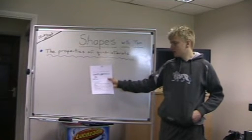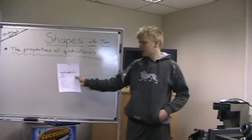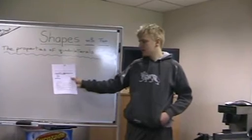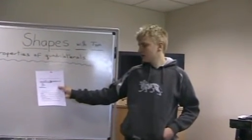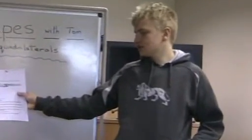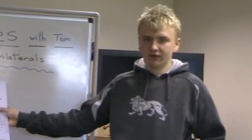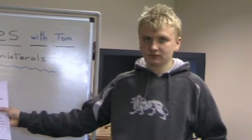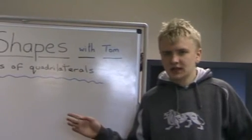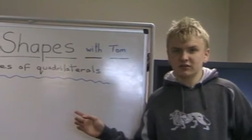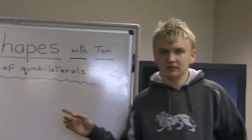A trapezium has got one pair of parallel sides. A kite has got two pairs of sides next to each other that have equal length. That is the properties of quadrilaterals — hope this has been a help.